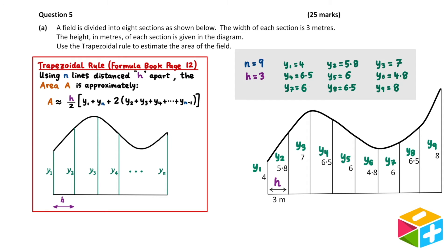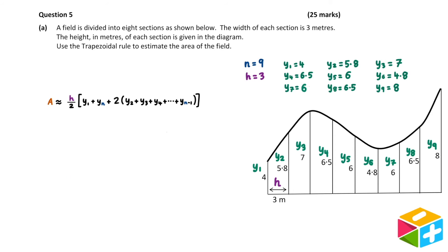We've now found all the values we need to use our formula. We found that n was equal to 9, so in our formula, we can replace the yn with a y9, and since 9-1 is 8, we can replace the yn-1 with y8. Now, let's sub the values we found into the formula.